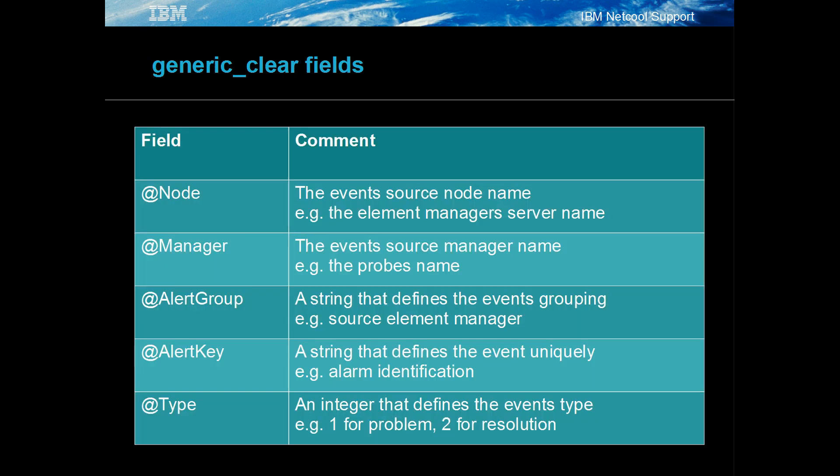The main generic clear fields are defined as: node, typically the server's name; manager, typically the probe's name; alert group, typically the event's source or group name; alert key, typically an alarm identification value or string; and type, which is set to 1 for a problem and 2 for a resolution.